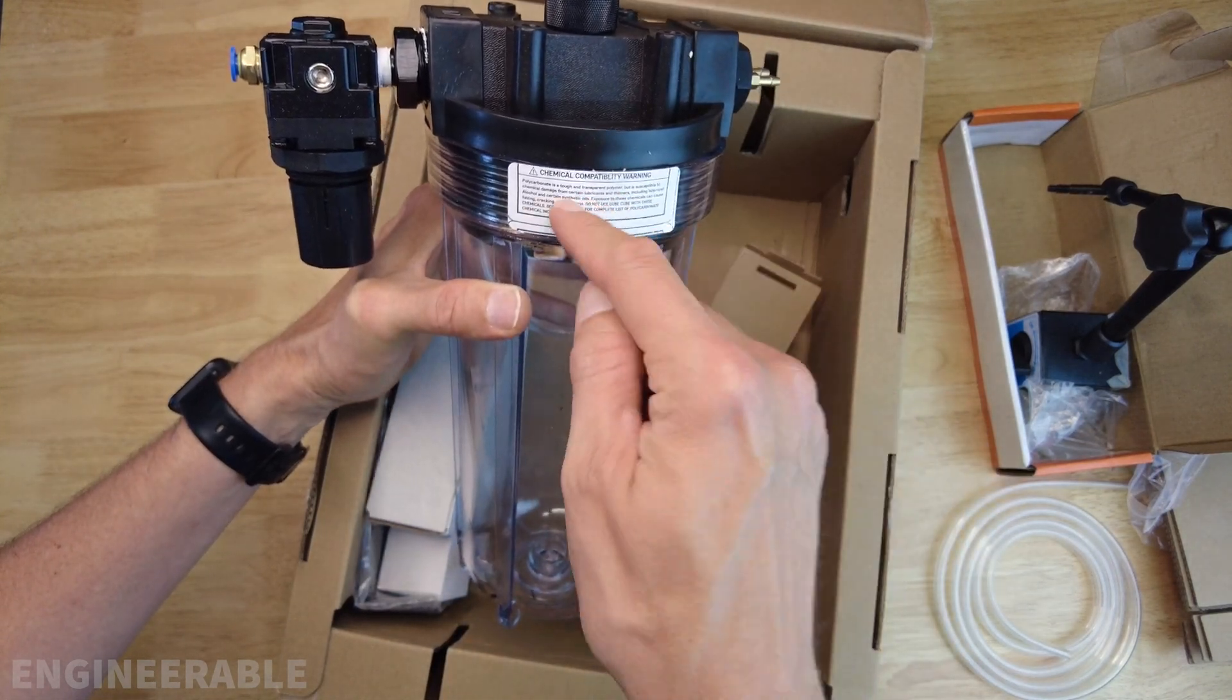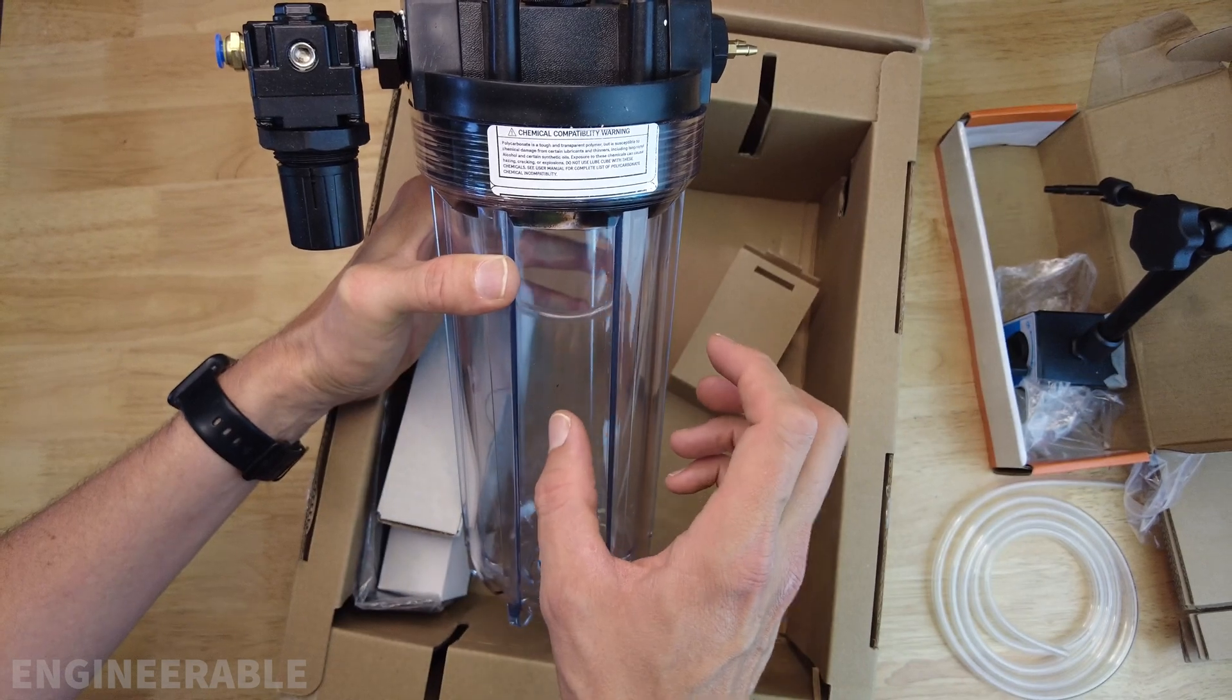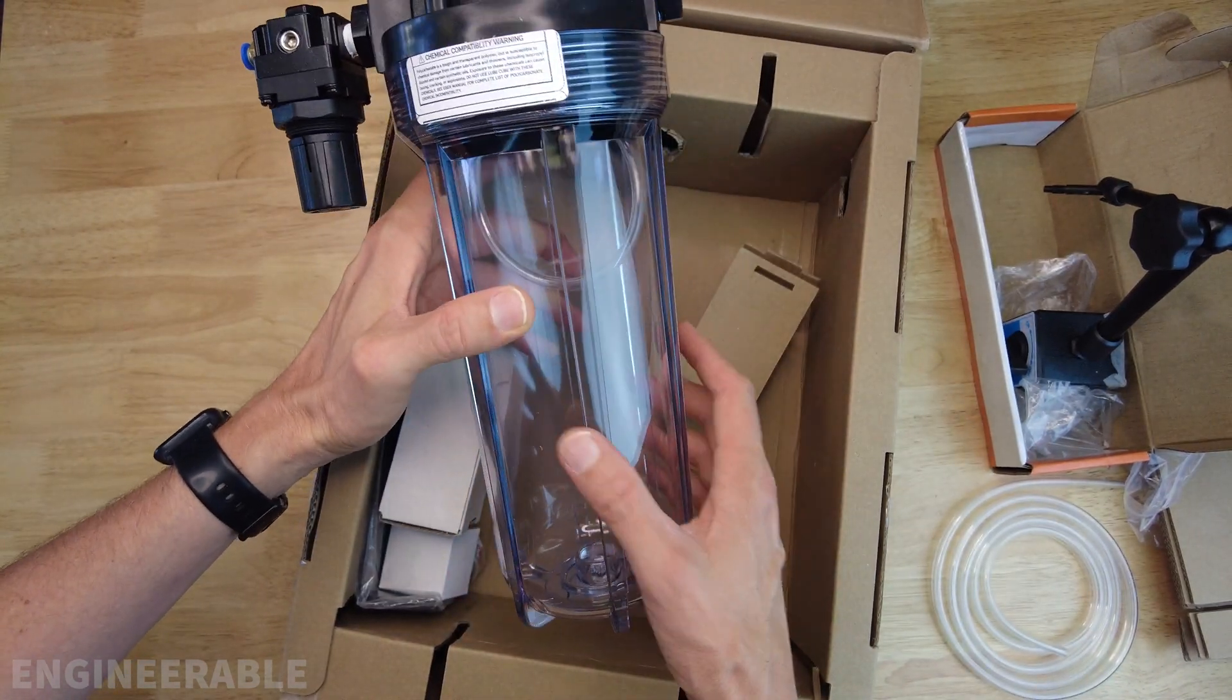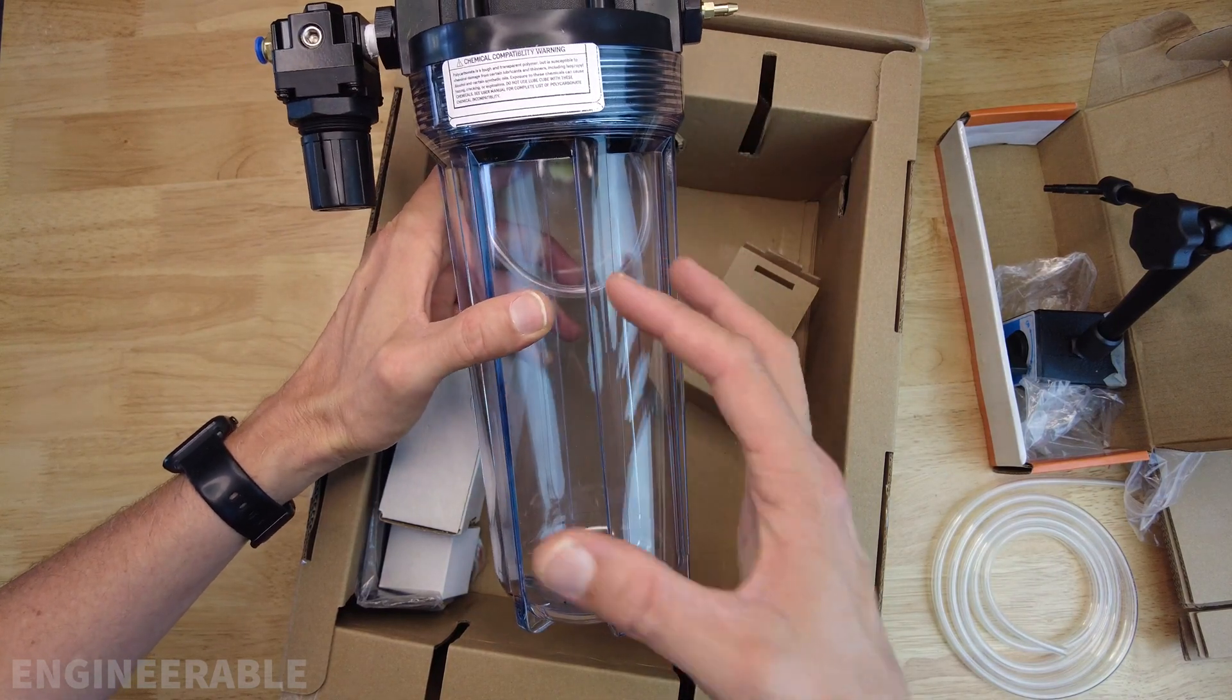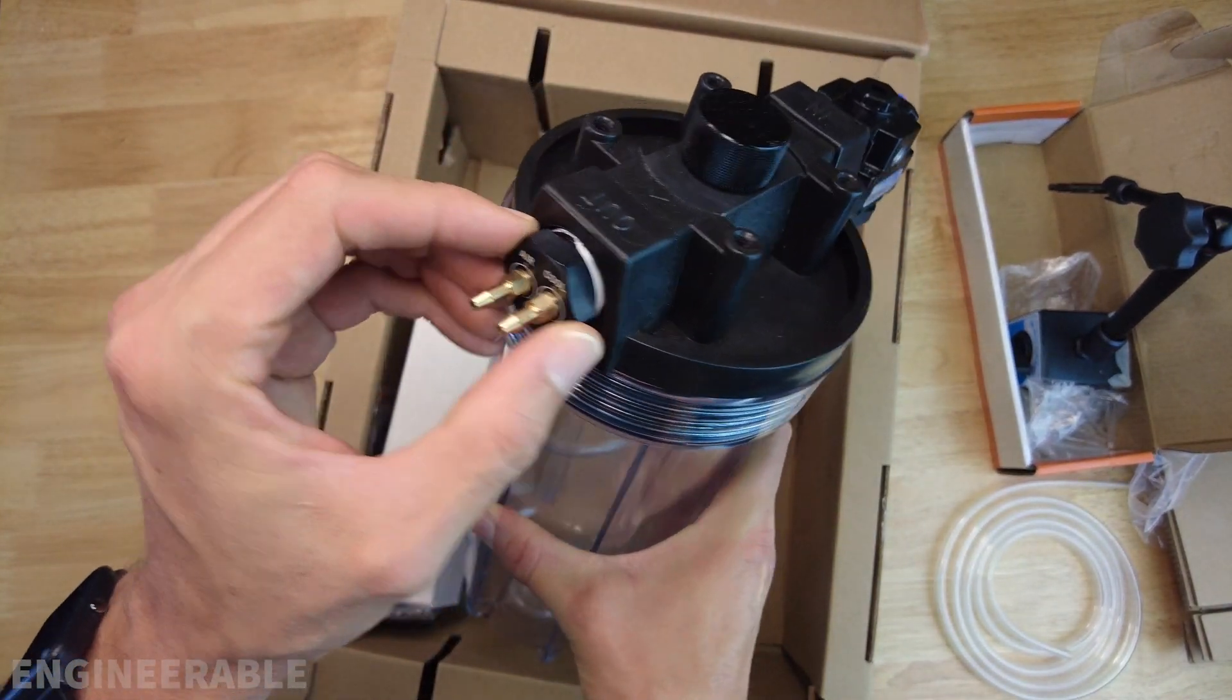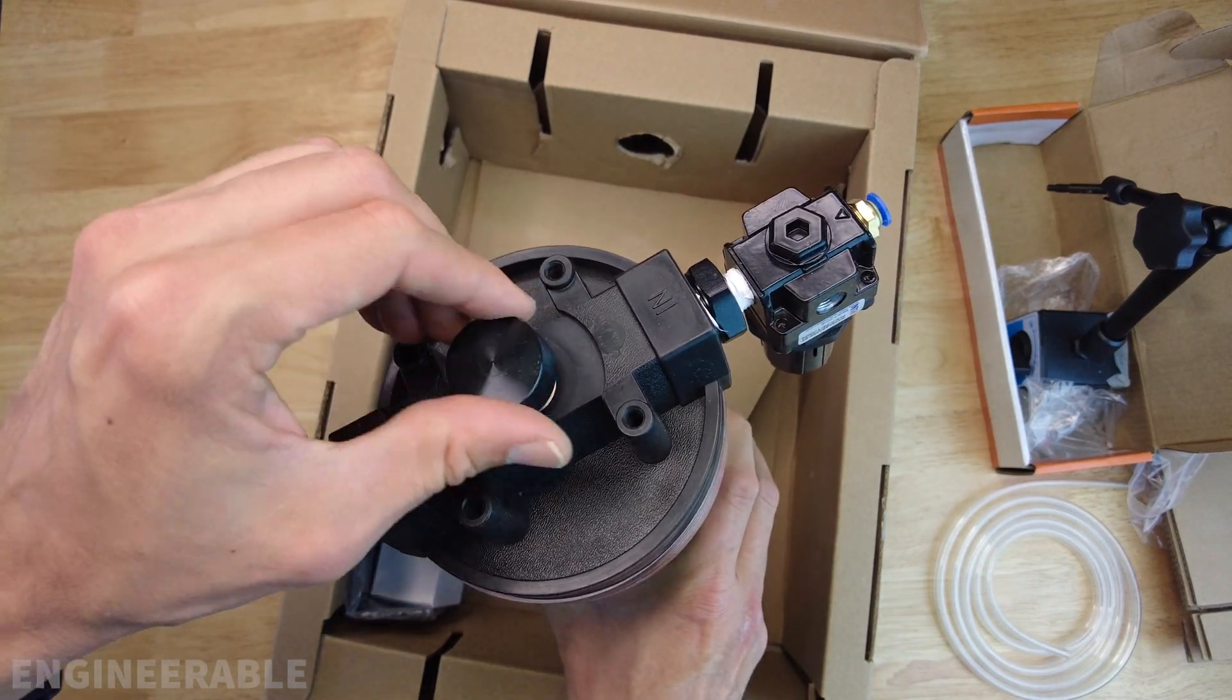I have seen some reviews where someone did not heed these warnings and used alcohol and this thing burst. Even at the low pressures you're going to be using this at, it's still a lot of force and it can burst violently and do a lot of damage. To be honest, I don't really trust this because I don't know what certain synthetic oils are, so I'm going to be making a metal cage that goes around this and will capture any fragments if this does explode. This valve says made in China, so the assembly was probably done in the US from international components.